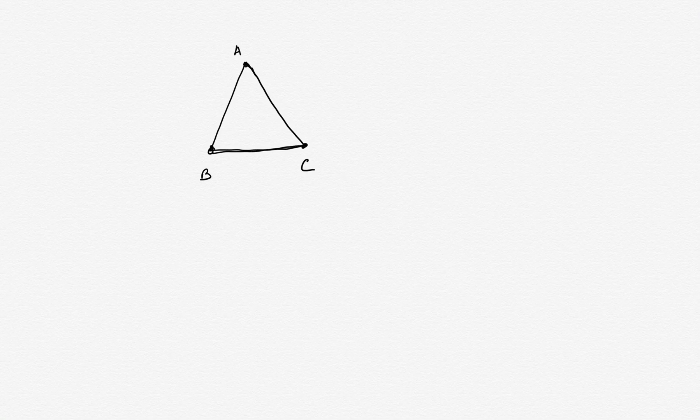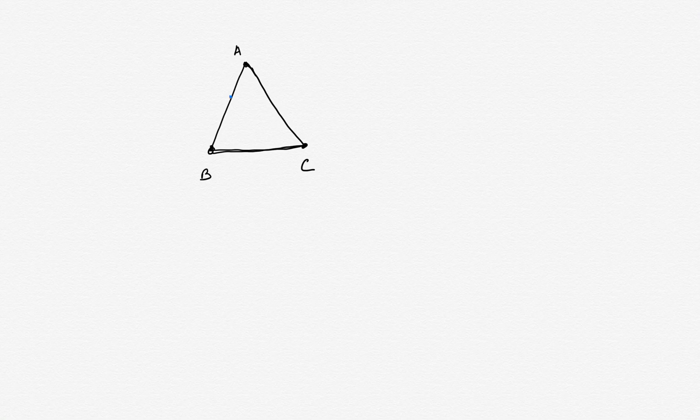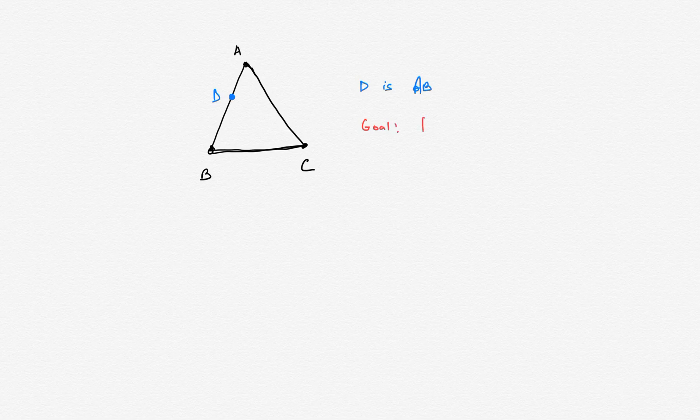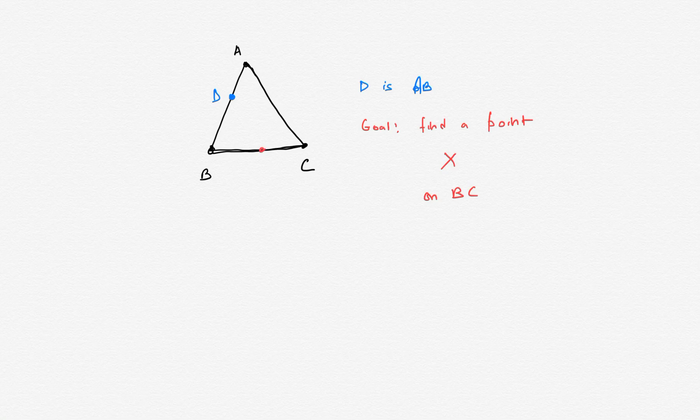Now let's pick an arbitrary but fixed point D on side AB. So D is on AB, and our goal is to find a point X on side BC.